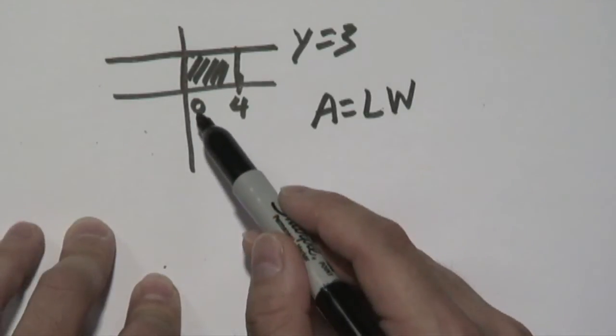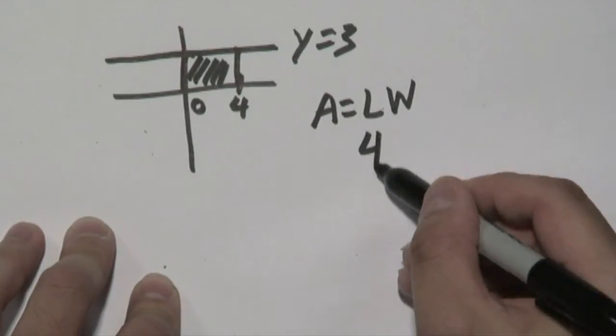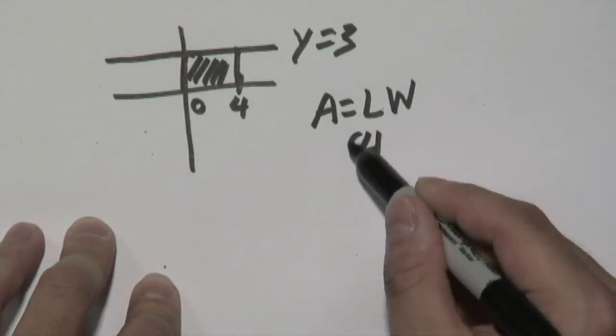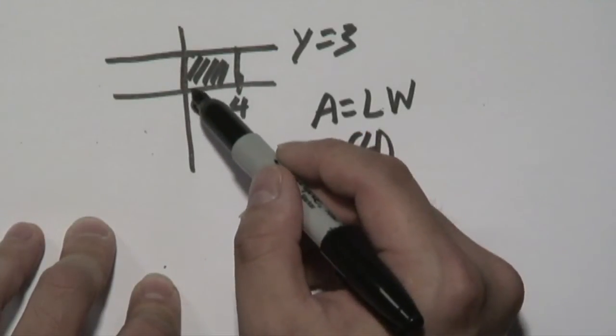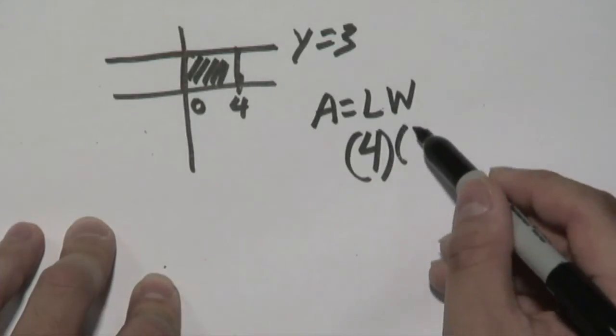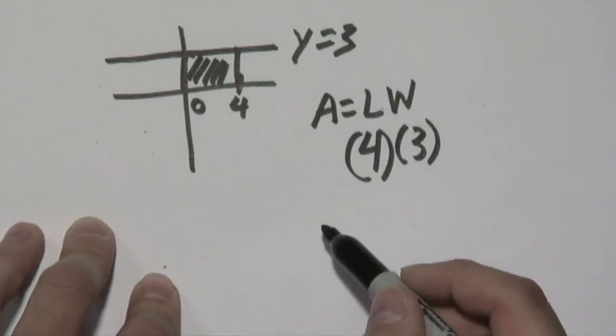From 0 to 4, you know it's going to be 4 units long. In terms of width, going from 0 to 3, it all depends on perspective, of course, but you know it goes from 0 to 3, and you have 4 times 3.